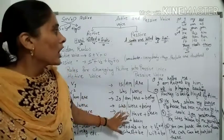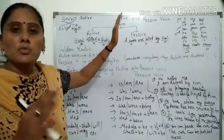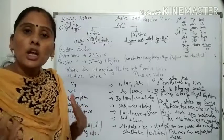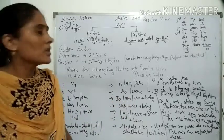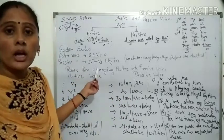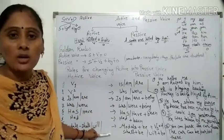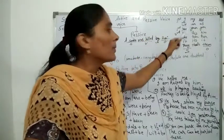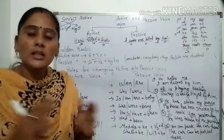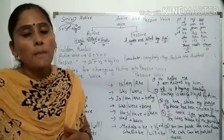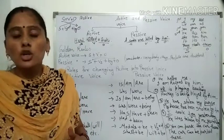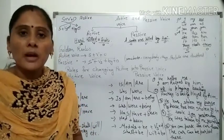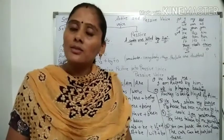Hope आपको यह topic समझ में आ गया होगा। जब subject के द्वारा directly काम किया जाए तो वो active voice है, और जब subject को या subject के लिए कुछ किया जा रहा है तो passive voice है। दोनों का structure दिया हुआ है, tenses का chart और pronouns का chart भी बनाना है। घर पर practice करें और इस topic को और अच्छे से समझें। Thank you।